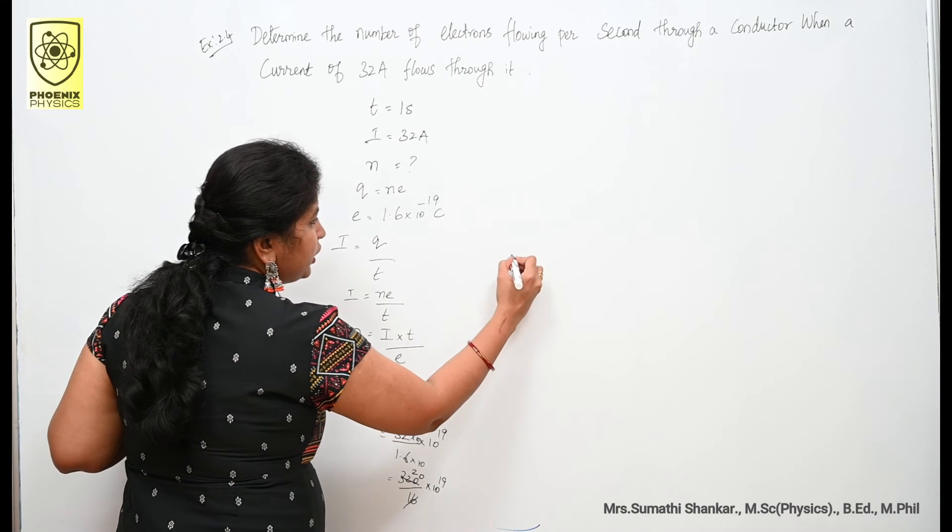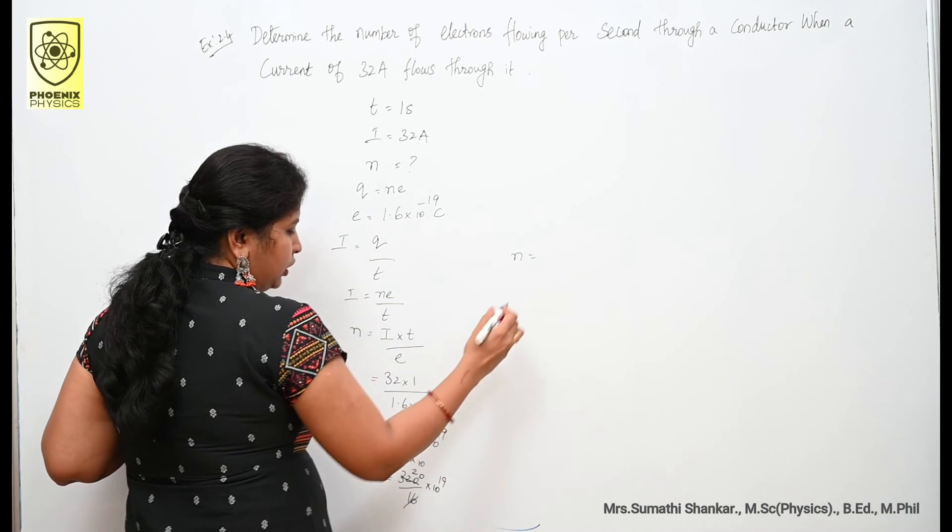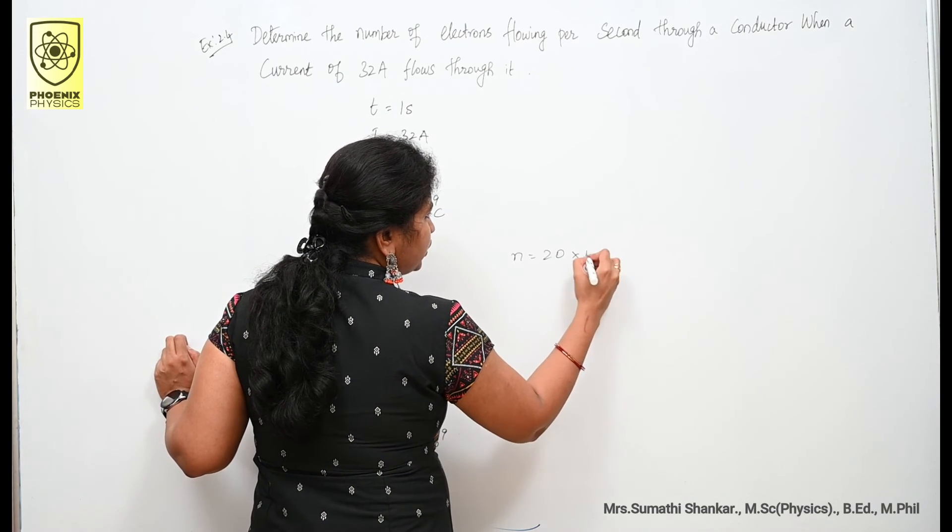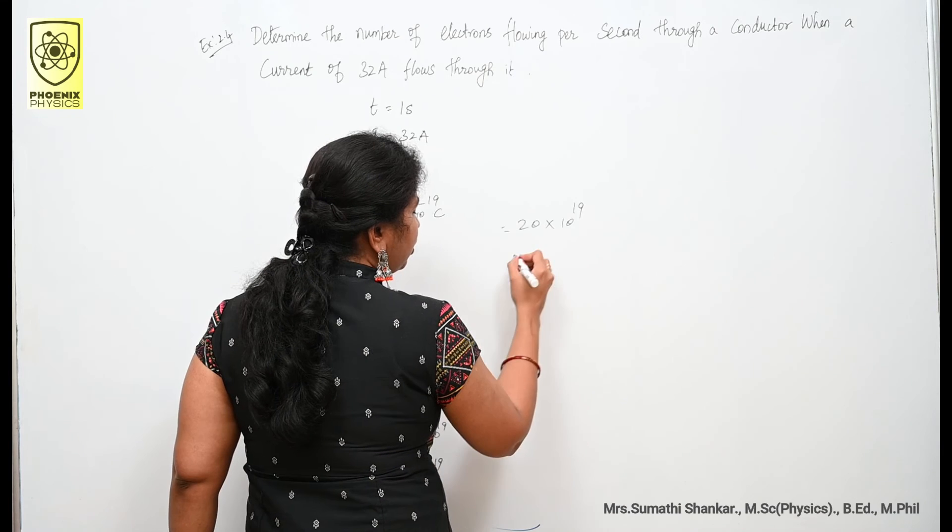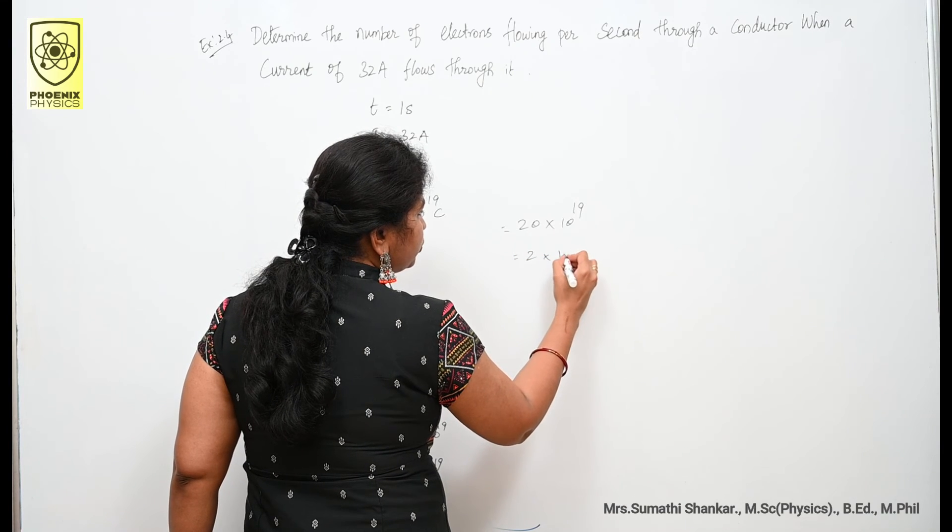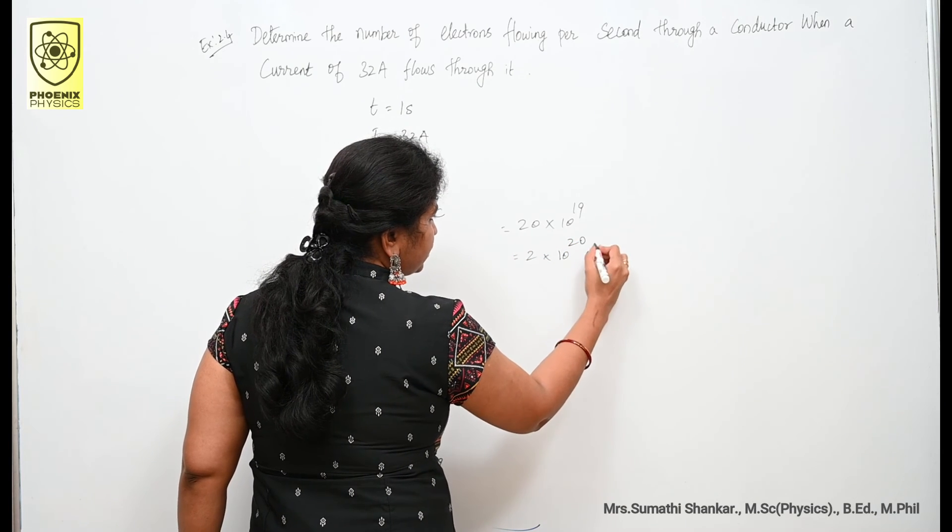Your answer is n is equal to 20 into 10 to the power of 19, or 2 into 10 to the power of 20 electrons. This is our n value.